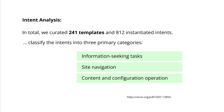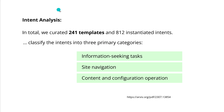They optimized the tool set and built 241 templates for more than 800 instantiated intents. They did this with classification for information seeking, site navigation, and content and configuration operations. Intent analysis with 241 templates where human-machine interaction took place — they found this is the best way to do specific jobs.